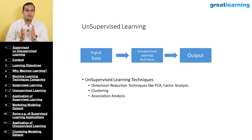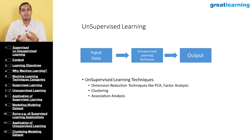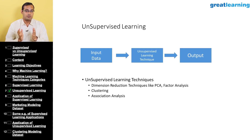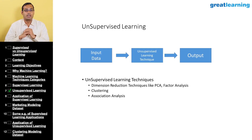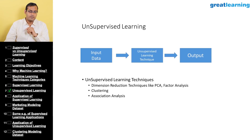The third type of unsupervised learning is association analysis. A classic example is market basket analysis, where we look at what different products customers buy together. This is commonly used by e-commerce platforms for recommendation engines — when you buy a product, the website suggests associated products that other consumers have purchased along with it.